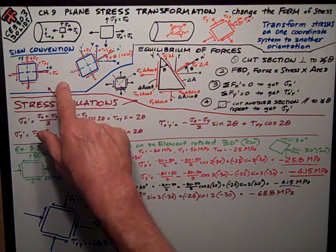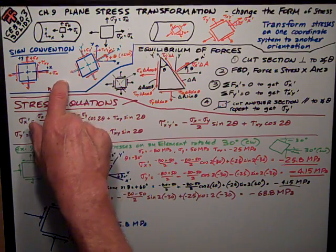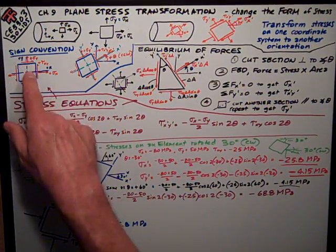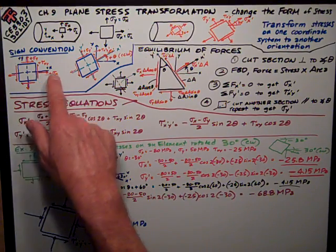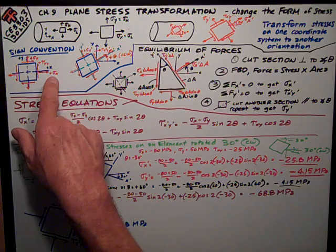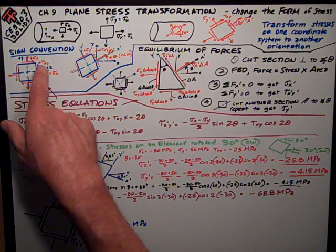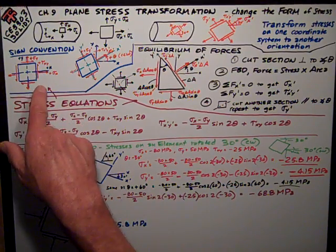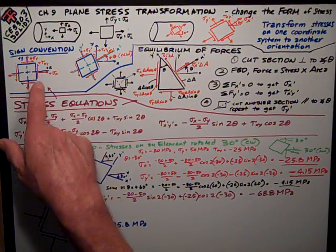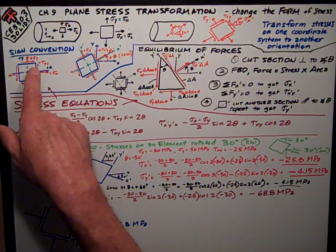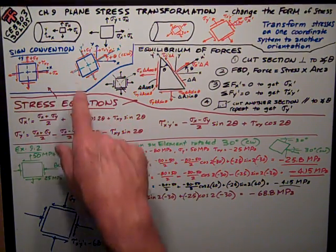We're going to use the sign convention of positive stresses are tension when they're normal stresses, and they are outward from the element, sigma x positive and sigma y positive. And then we're going to define positive shear stress as up on the right side of the element. So that's positive tau xy. Then if we rotate it,